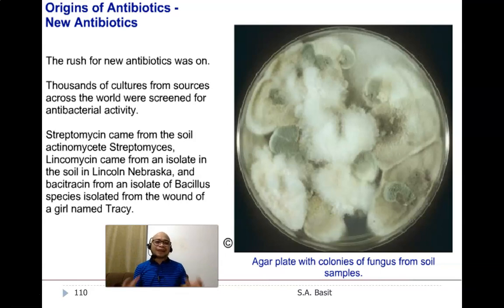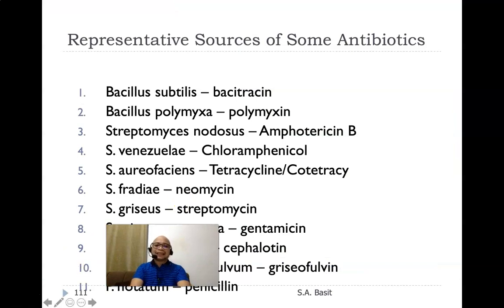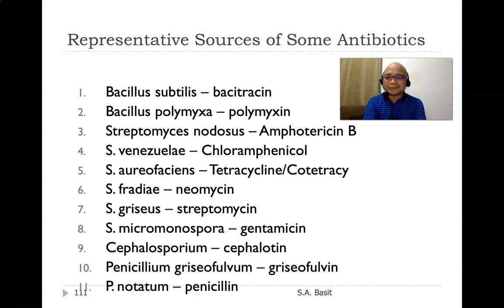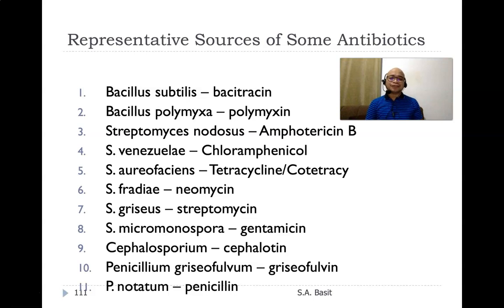Organisms produce substances that inhibit the growth of other microorganisms. Sources of antibiotics include: bacitracin from Bacillus subtilis, polymyxin from Bacillus polymyxa, amphotericin B from Streptomyces nodosus, chloramphenicol from Streptomyces venezuelae, neomycin from Streptomyces fradiae, streptomycin from Streptomyces griseus, gentamicin from Micromonospora, cephalosporins from the cephalosporium group, griseofulvin from Penicillium griseofulvum, and penicillin — the first antibiotic — was discovered by Alexander Fleming from Penicillium notatum.